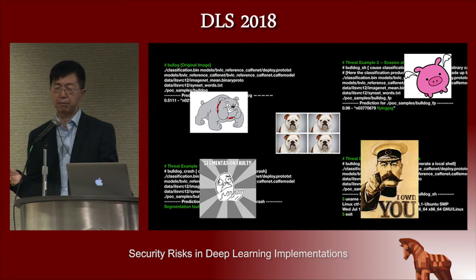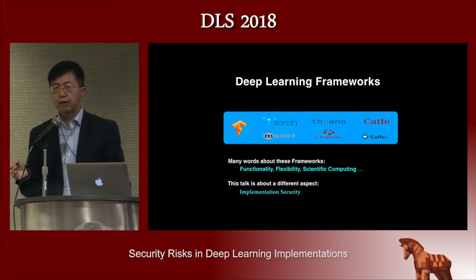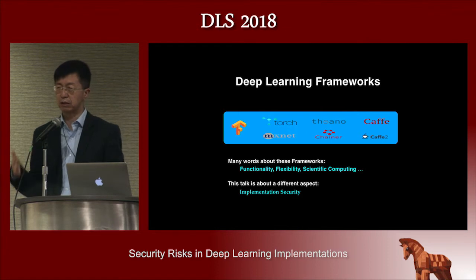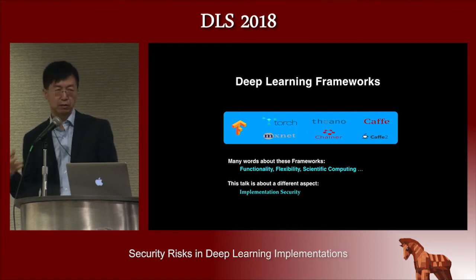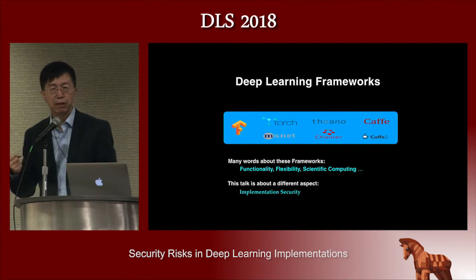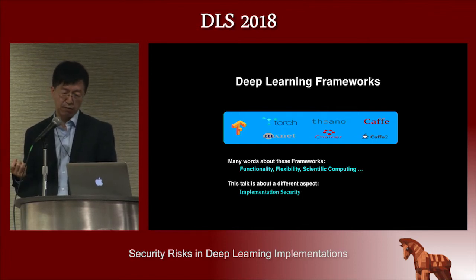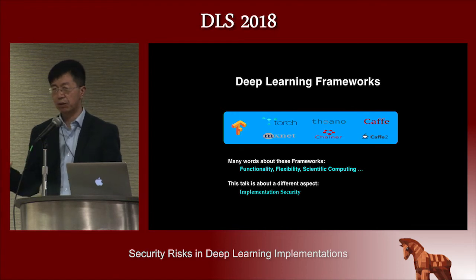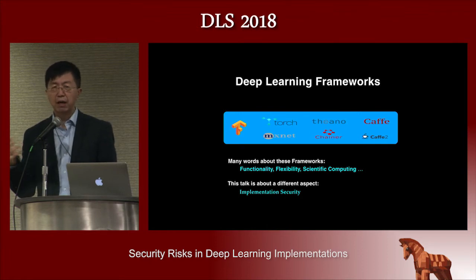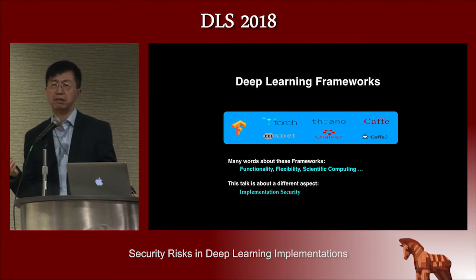So what really happened? Most deep learning applications are built over deep learning frameworks. There are many popular frameworks like TensorFlow, Caffe, Torch — at least 10 of these. When you look at the documentation related to these frameworks, people tend to emphasize functionality and flexibility — they say they can do scientific computation — but not many people look into the detail about their implementation. Our paper is about the implementation of these frameworks.